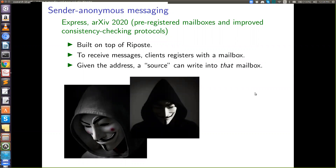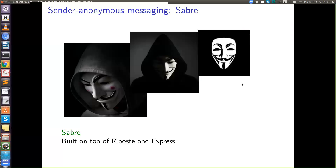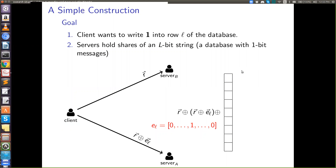This has many applications, especially in journalism — for instance, a whistleblower might want to share details about human rights violations to a journalist anonymously. By the same authors, a system called Express was built on top of Riposte with a slightly different model: clients can register with a mailbox, and any source can write evidence anonymously into that mailbox with no one knowing who wrote it or where. Our contribution is Sabre, built on top of both Express and Riposte.